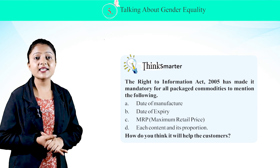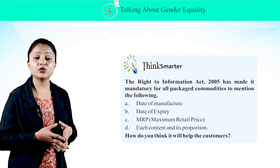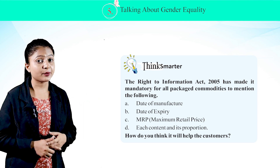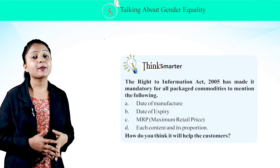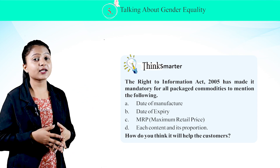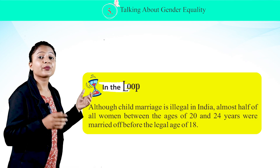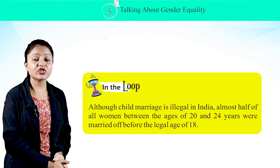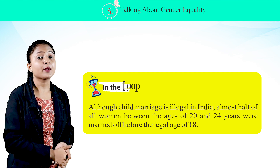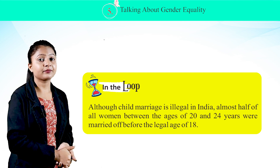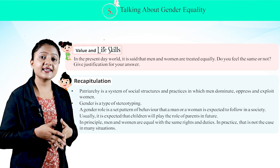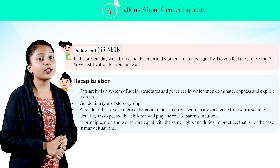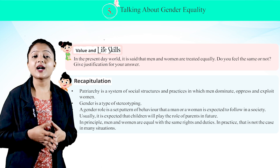Think Smarter: The Right to Information Act 2005 has made it mandatory for all packaged commodities to mention the date of manufacture, date of expiry, MRP (maximum retail price), and each content and its proportion. How do you think it will help customers? In the Loop: although child marriage is illegal in India, almost half of all women between the ages of 20 to 24 years were married off before the legal age of 18. Value and Life Skills: in the present-day world, it is said that men and women are treated equally — do you feel the same or not? Give justification for your answer.